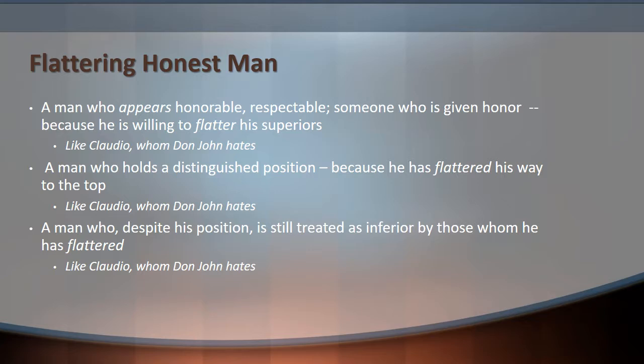So what is a 'flattering, honest man'? It's a man who appears honorable and respectable, someone who has been given repute or honor — because he's willing to flatter his superiors, which according to Don John is what Claudio has done, and Don John hates Claudio. A flattering, honest man could be a man who holds a distinguished position of honor — and how did he get that position? Because he has flattered his way to the top, again like Claudio. And a flattering, honest man is also someone who, despite his position, is still treated as inferior by those he has flattered — still called 'an honest servant,' for example, by those in higher positions. No matter how much Claudio might flatter Don Pedro, he's still Don Pedro's inferior.